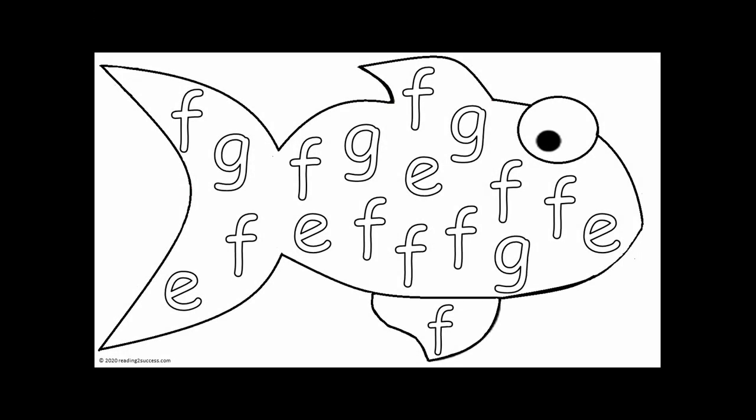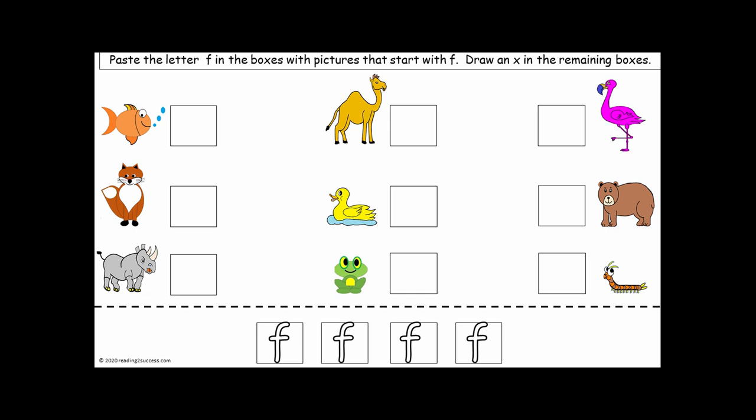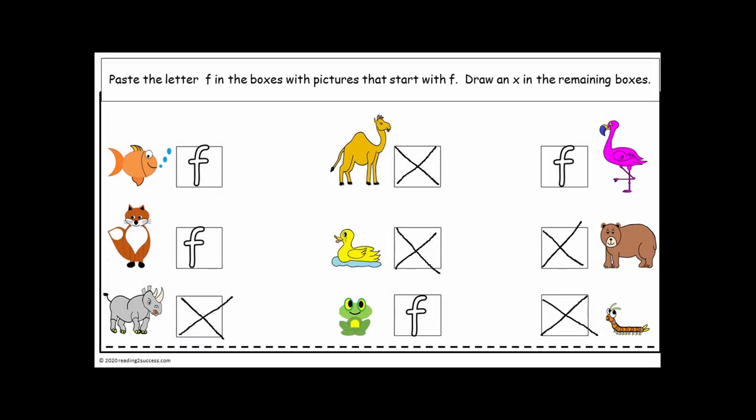Have kids color in each letter that is an F. Here is a completed example. Cut out the letters below the cutting line and then have kids paste the letters in the boxes with pictures that start with F. In the remaining boxes, have kids draw an X. Here is an example of a completed page.